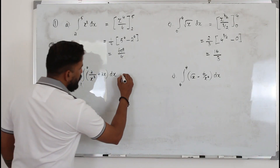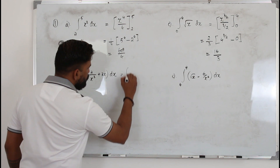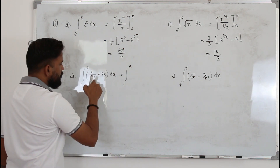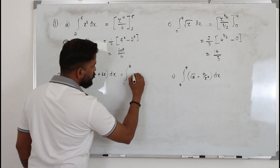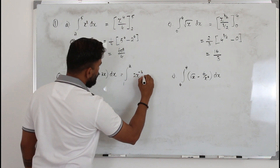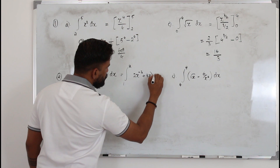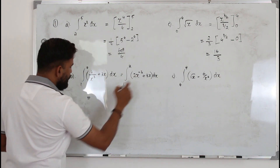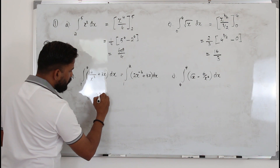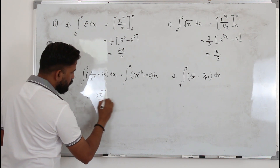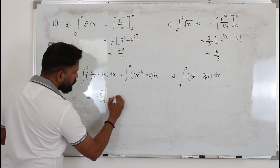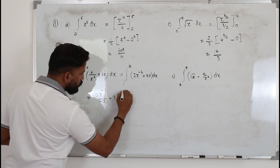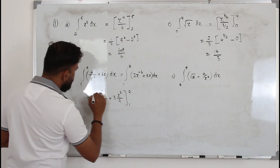Here, to integrate, you write the function by bringing x cubed to the numerator, giving you 2x power negative 3 plus 3x dx. When you integrate this, 2x power minus 3 plus 1 over minus 3 plus 1, plus 3x — when you integrate x it becomes x squared over 2. Substitute the limit 1 to 2.